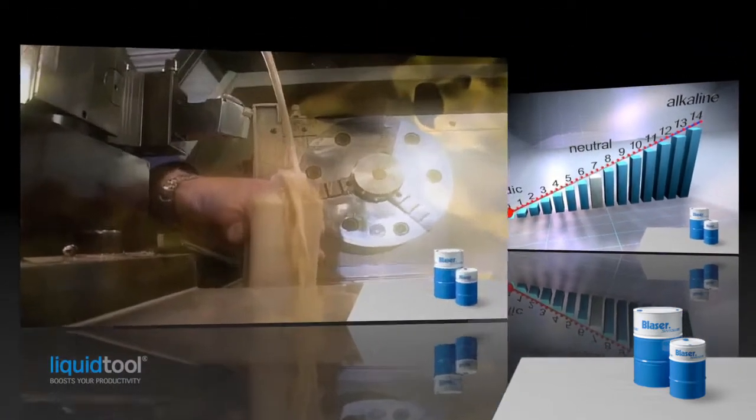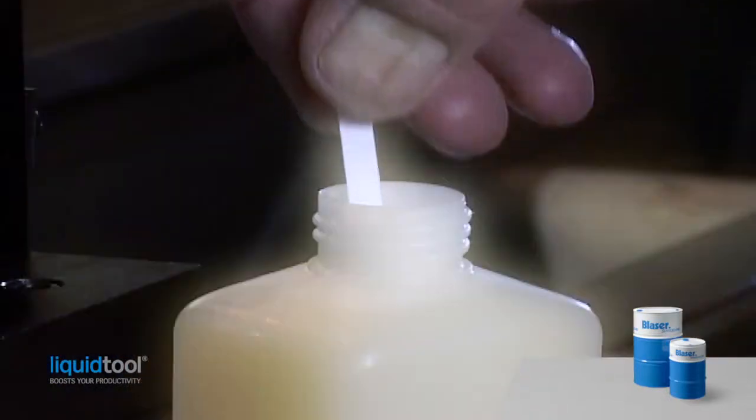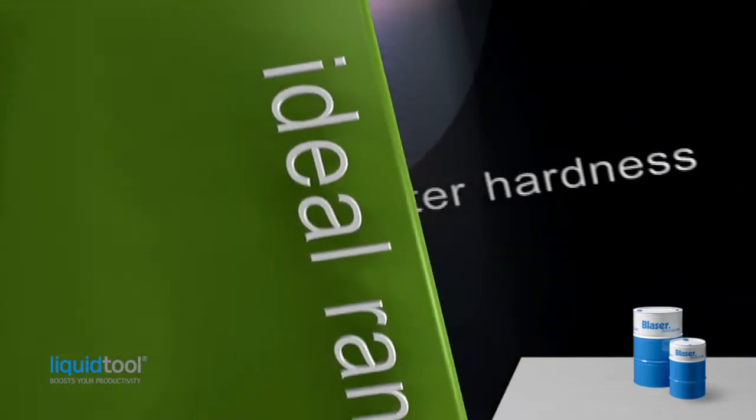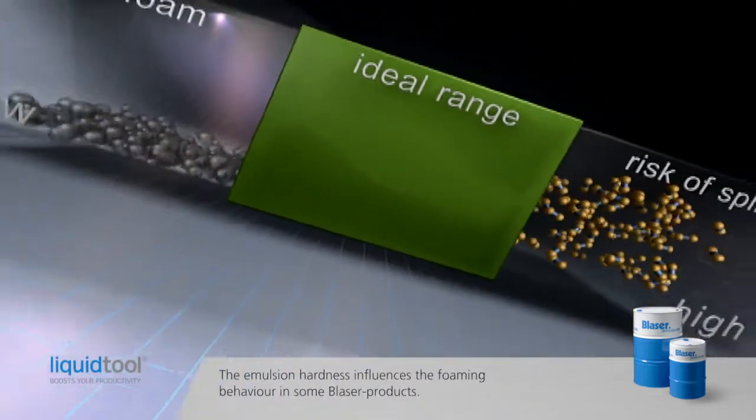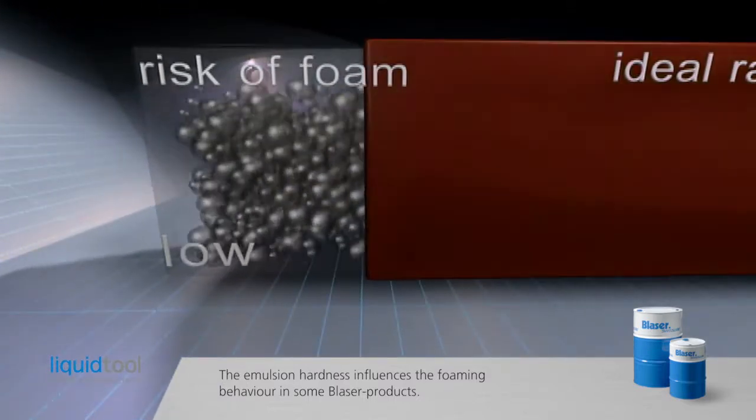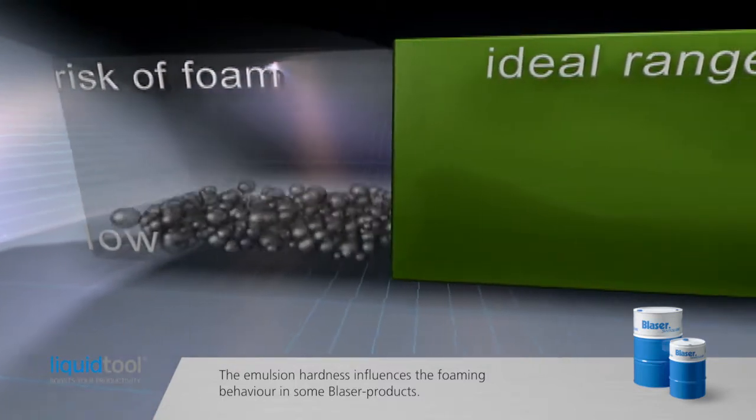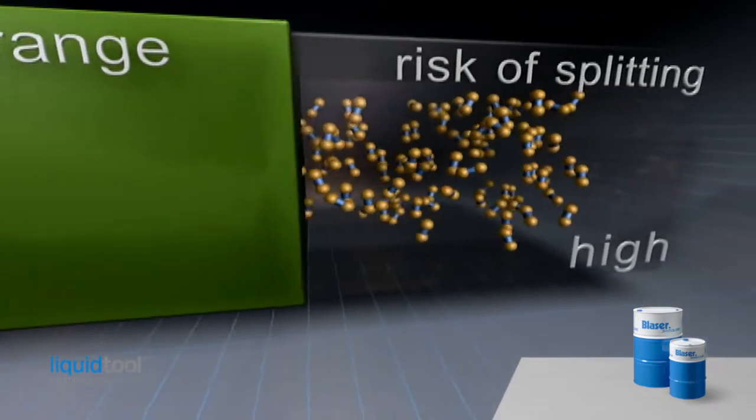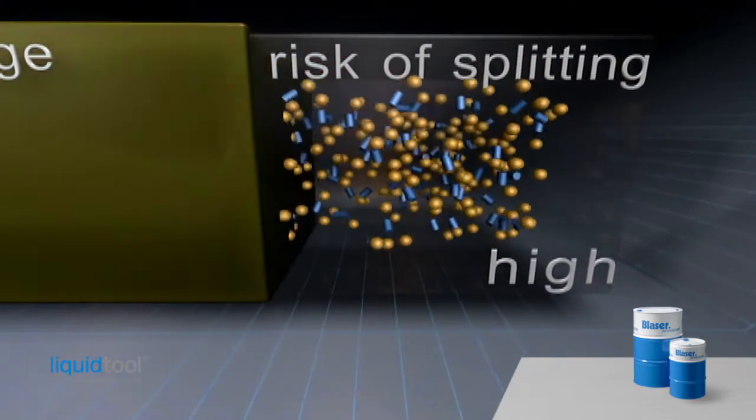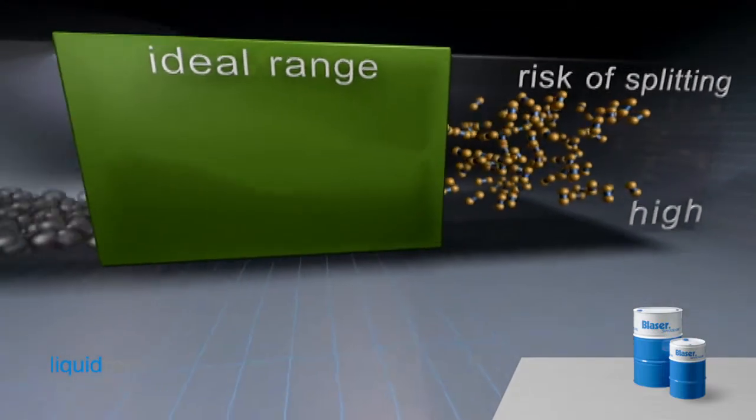The third measurement taken on site is the determination of emulsion hardness. Hardness testing strips are used for measuring. The emulsion hardness influences the foaming behavior in some Blaser products. Emulsions with low hardness tend to foam. Emulsions that are too hard can cause instability. The foaming behavior of a few products is hardly affected by increasing hardness, for example Grind X10, Vasco 5000, and some B-Cool products.